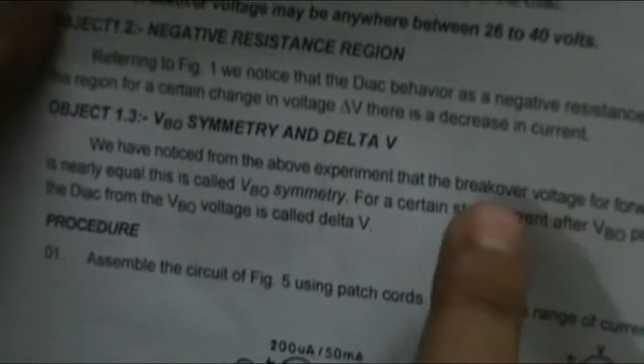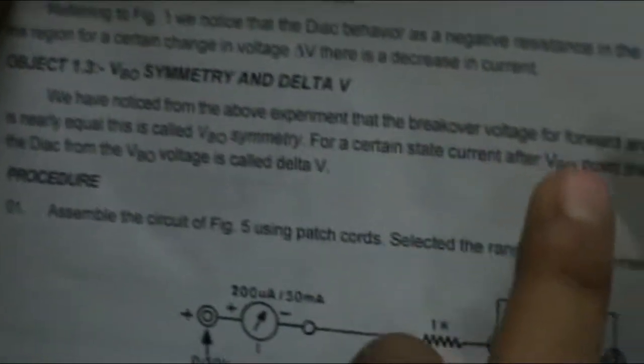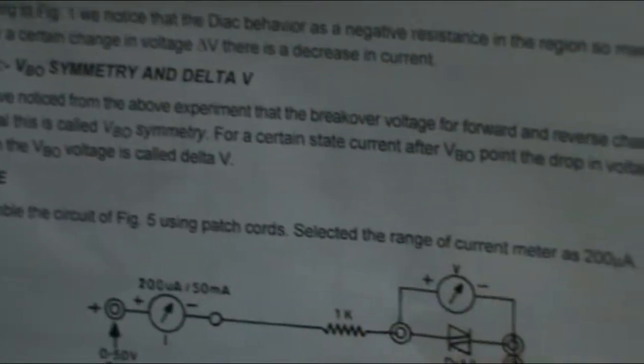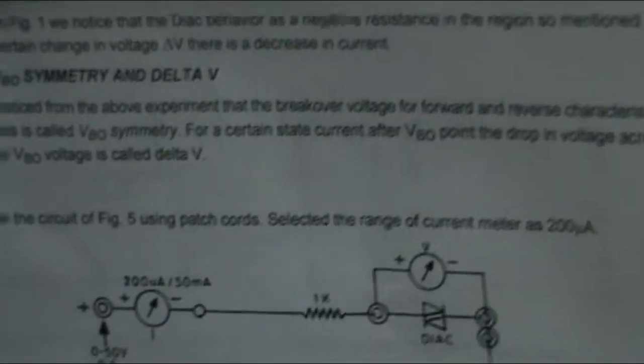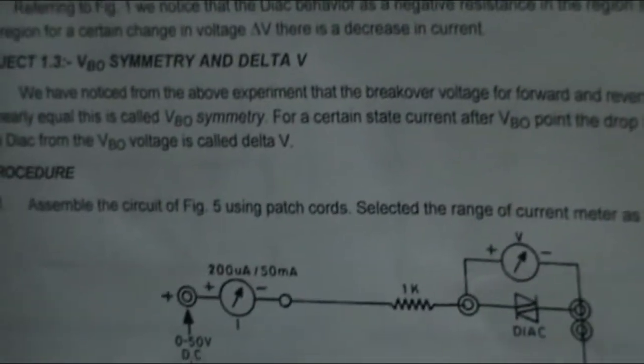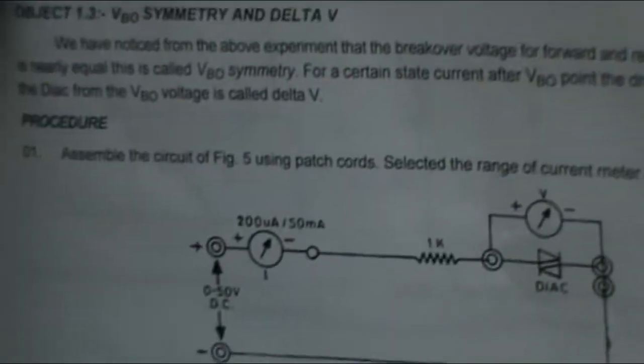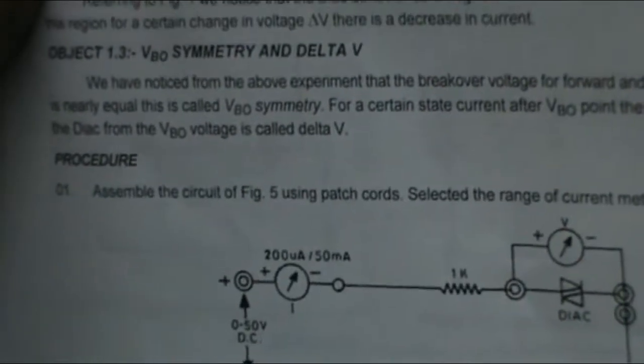VBO symmetry and delta V: when the break over voltage we get in the forward characteristics, the same voltage we get in the reverse characteristics. This is known as VBO symmetry.